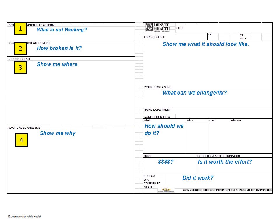Step 4: Show why it is the way it is — help get to the root cause. Step 5: Show what it should look like in the future. Step 6: Show what solutions we can try to address the root cause and get to the future state. Step 7: Show the steps we are going to take to implement our solution. Step 8: Show if it worked — what did the solution cost, was it worth it, and what is the plan for follow-up?